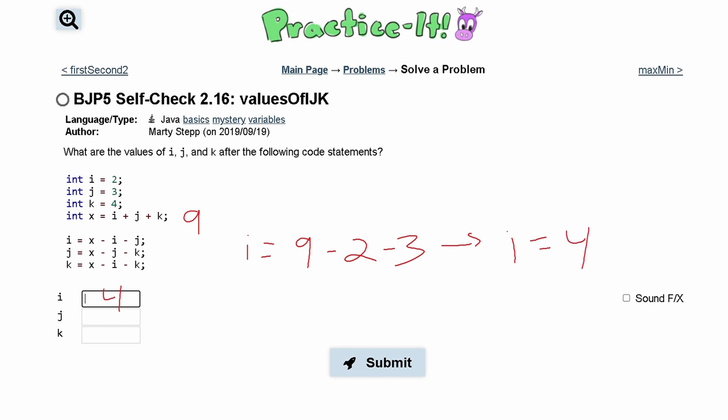So our new I value is 4, and J is equal to X which is 9 minus J which is 3 minus K which is 4. So that means we have 9 minus 7, and our new J value is equal to 2.